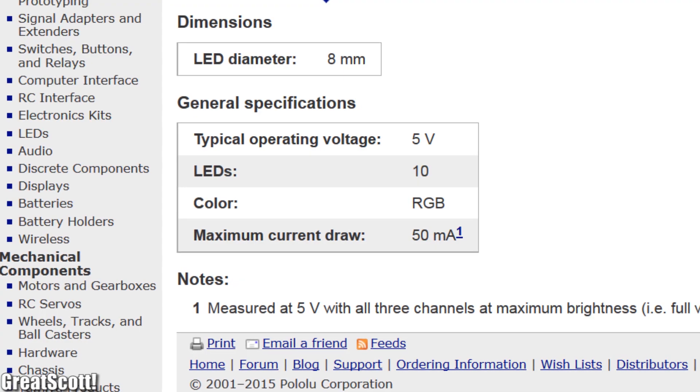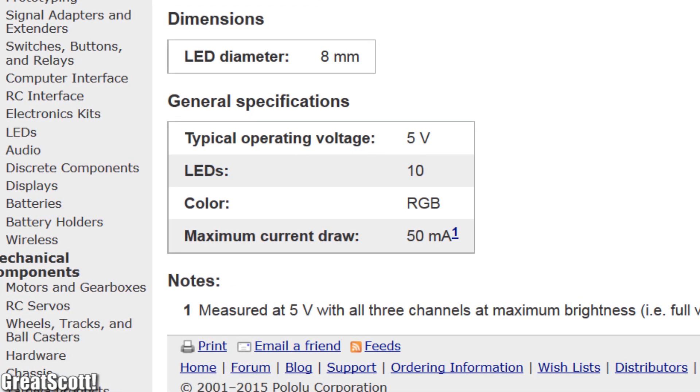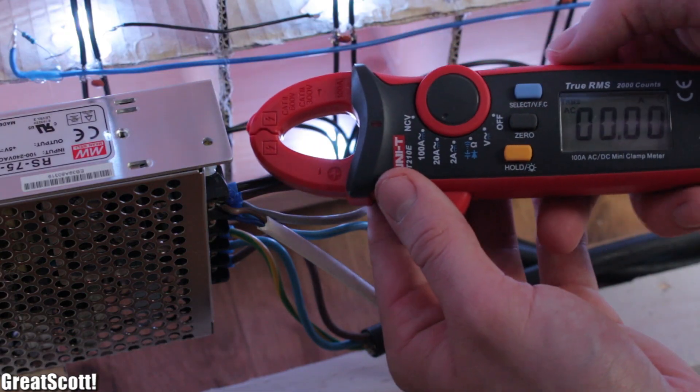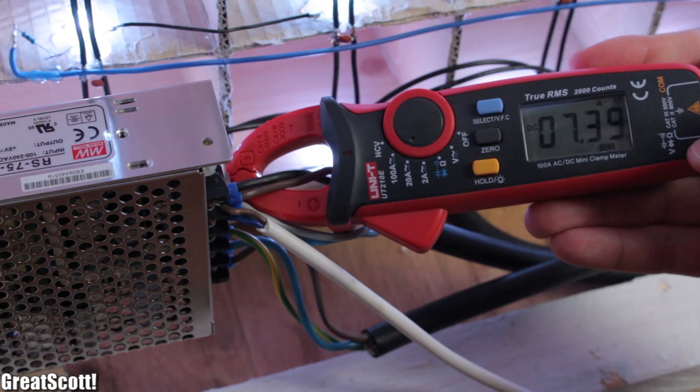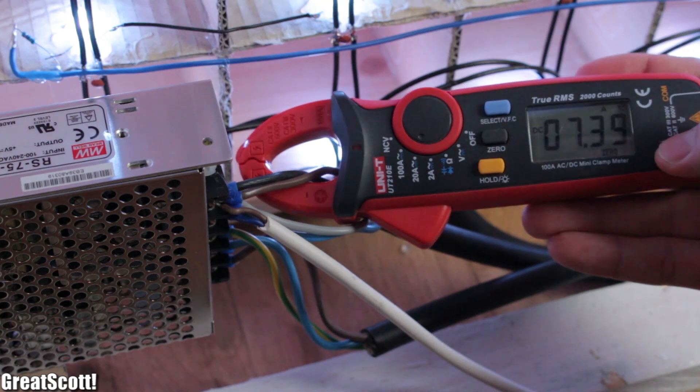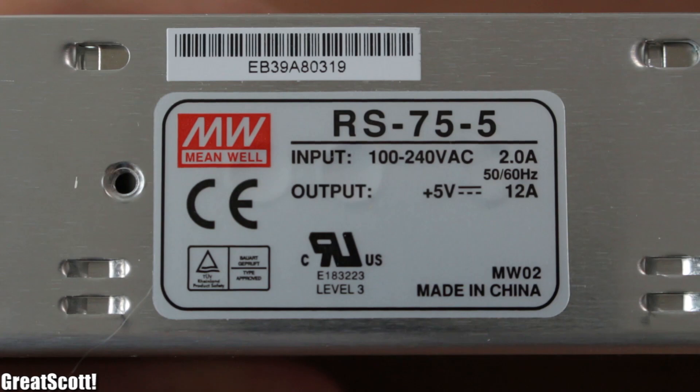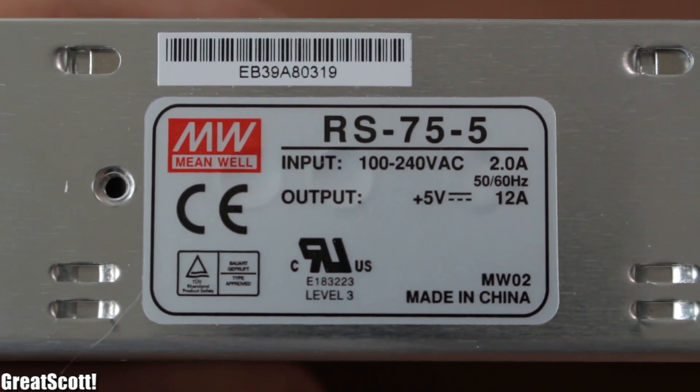Now we need some power. This shop claims that the maximum current of the LED should be around 50mA, which I can confirm because I double checked it with my current clamp later on and got around 7.4A. So we need at least 8A. I went with this 5V 12A power supply in the end. Because... You will see the reason in Part 3.